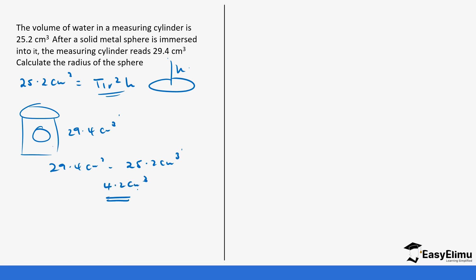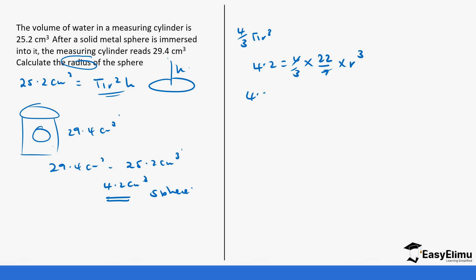The difference is 4.2 centimeters cubed — this is the volume of the sphere. How you interpret your question is very important. We know the volume of a sphere is 4/3 πr³, and the question asks us to calculate the radius. So: 4.2 = 4 over 3 times 22 over 7 times r cubed, which gives us 4.2 = 88 over 21 times r cubed. Multiply both sides by the reciprocal 21 over 88.